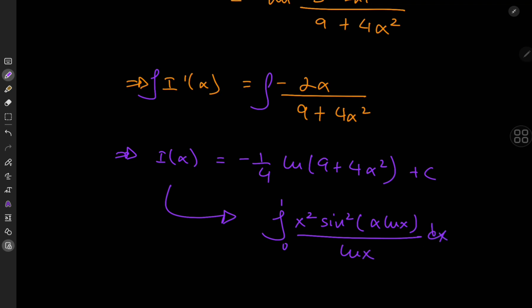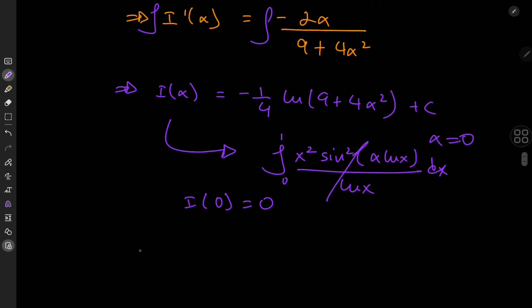So the placement of the parameter here is pretty convenient because if we let alpha equal to 0, then we have sine of 0, which is just 0, so the integrand collapses and we have a big fat 0. So i of 0, wait, terribly sorry about that, i of 0 equal to 0 means that 0 is going to be equal to negative 1 quarter log 9 plus c or c equals 1 quarter of log 9. Okay, cool.